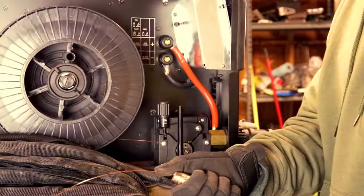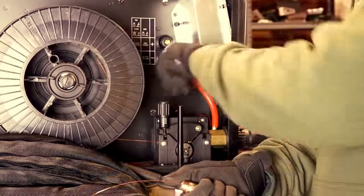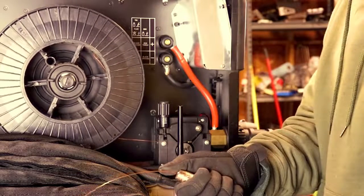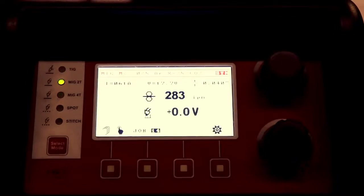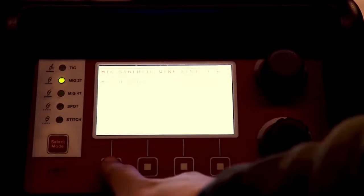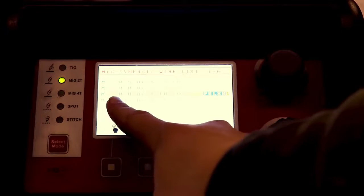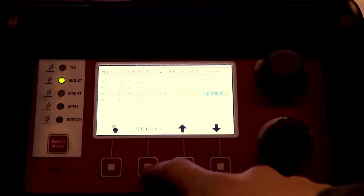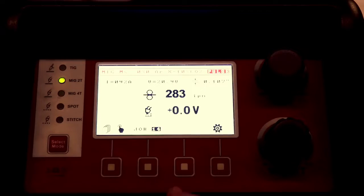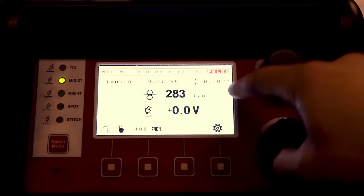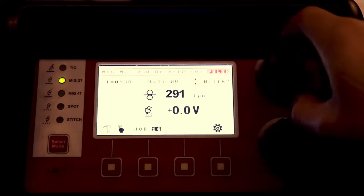With this, I'm just running your regular 0-3-0 ER-70S6 wire. To get into pulse mode on the HTP, you just go into mode, scroll to pulse steel, make sure we're using an 0-3-0 wire and we're set up with either a 90-10 or a 92-8 gas mix. Hit select and boom, ready to weld on some pulse.